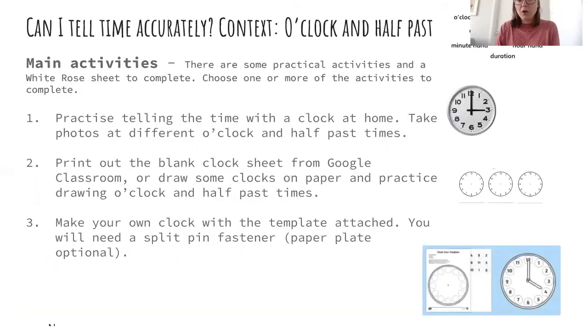Here are your main activities for your time. There are some practical activities and a White Rose sheet to complete, so you can choose one of them to do or you can complete as many as you like. Question one - practice telling the time with a clock at home. Take photos at different o'clock and half past times. So keep an eye on your clock. You might have one that looks like this.